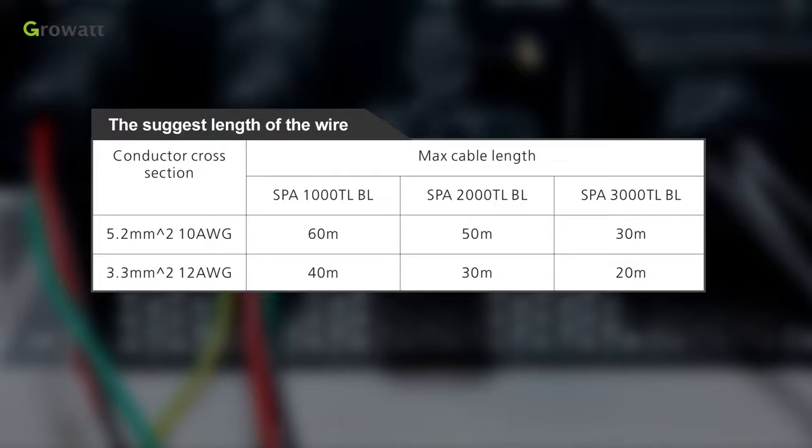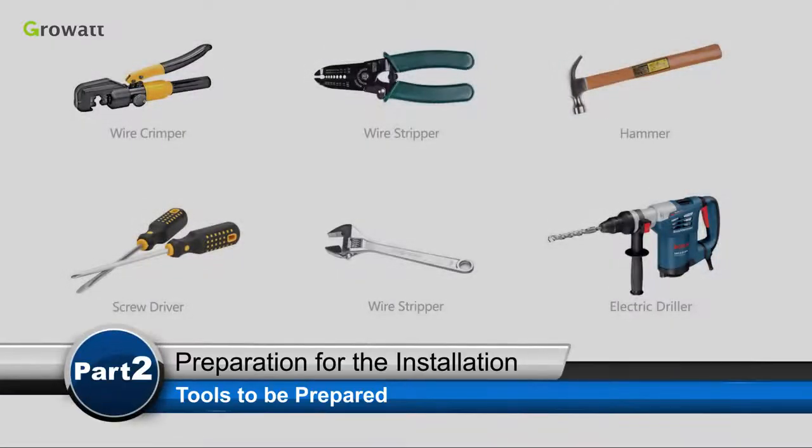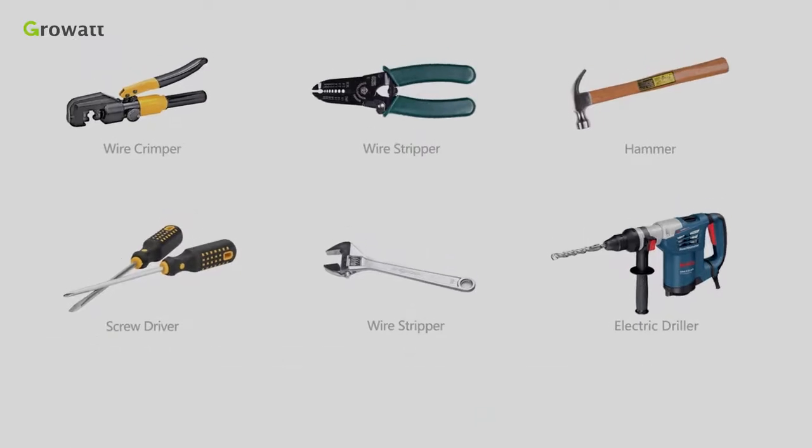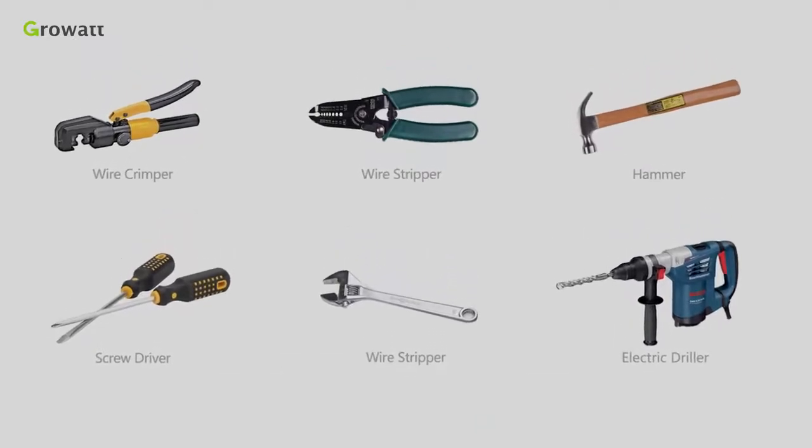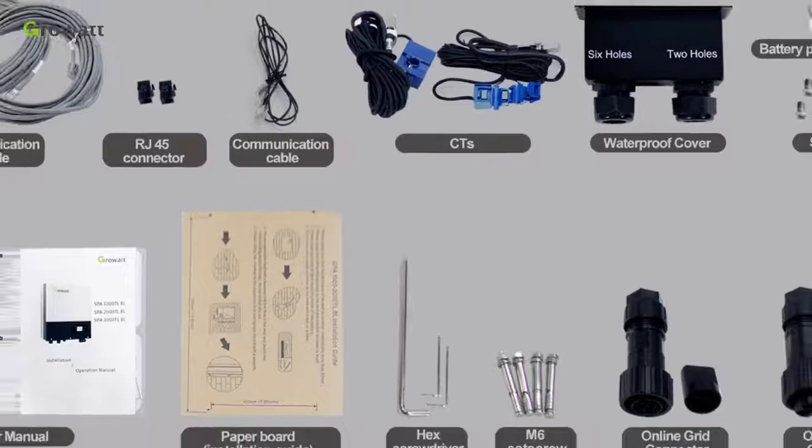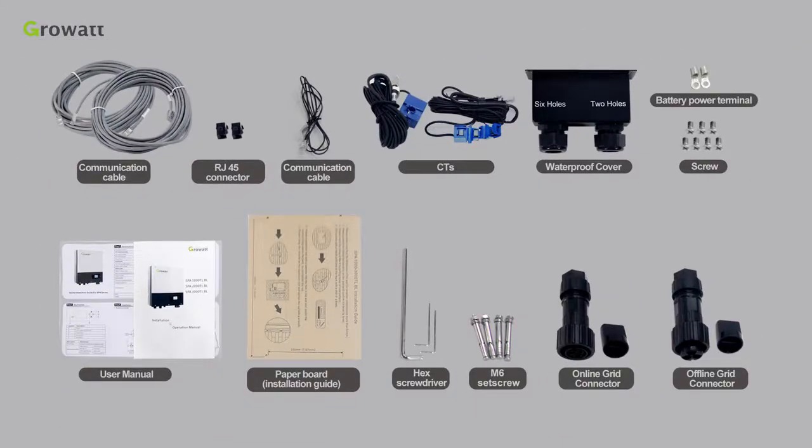The following is the recommended specification table of cable cross and length for different modules. Before installation, the tools we need to prepare are listed below. Unpacking the package, take out the accessories and inverter. According to the accessories listed in the manual, check whether there is anything missing or not.